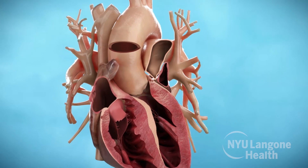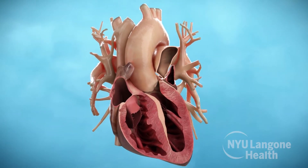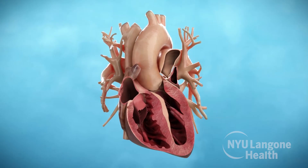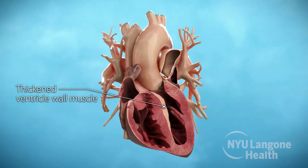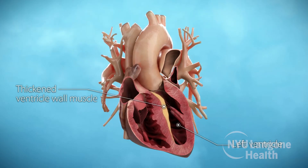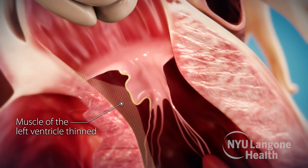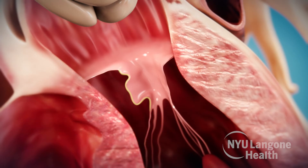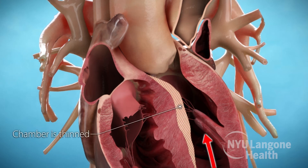Septal myectomy is the surgical treatment to remove the obstruction. Residual leaflet excision is an additional procedure that is often necessary to fully improve the flow of blood through the heart. In septal myectomy, cardiac surgeons thin the muscle in the walls of the left ventricle, which is the heart's main pumping chamber.